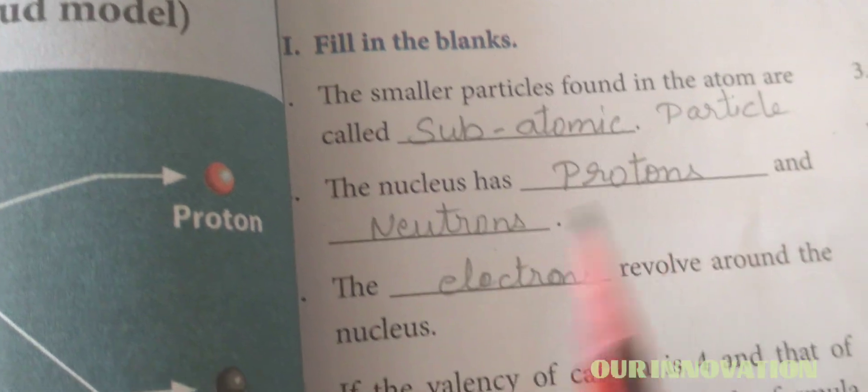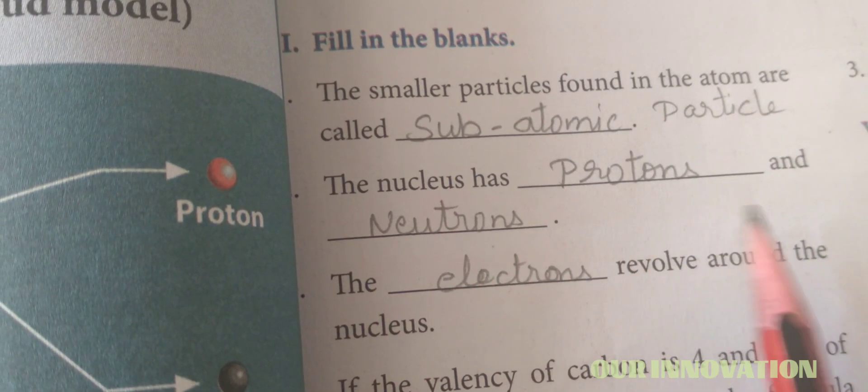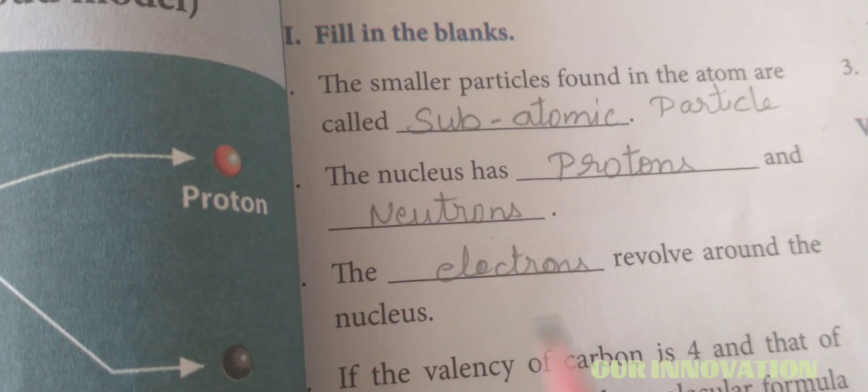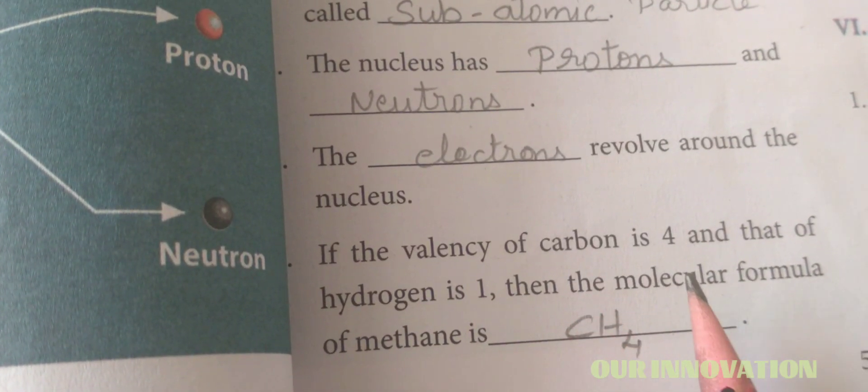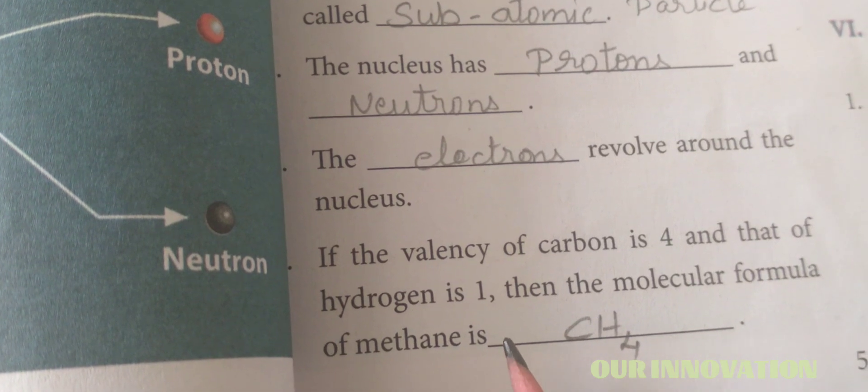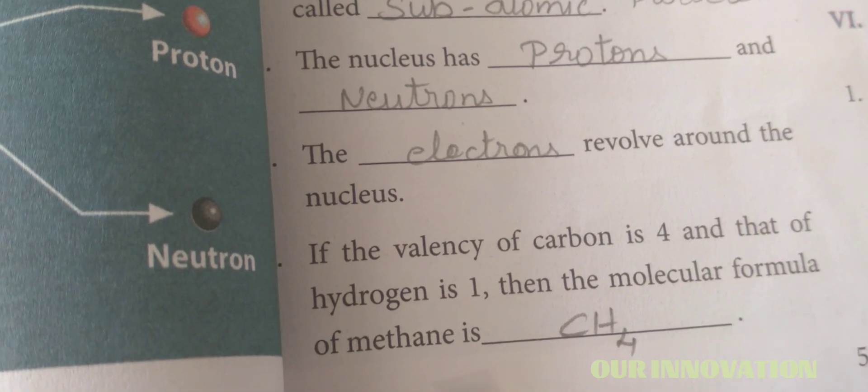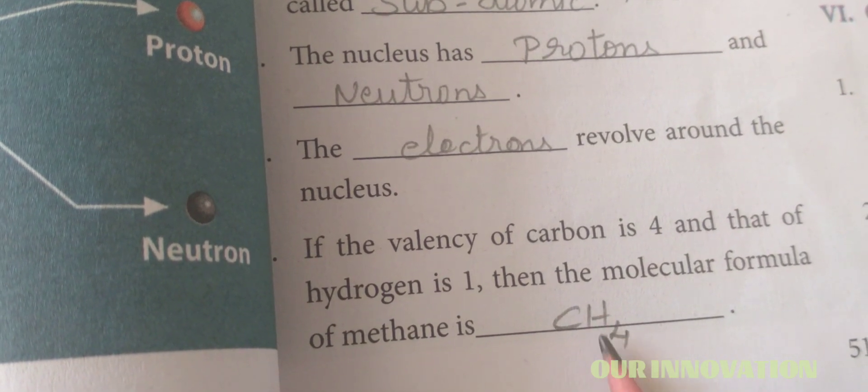Fill in the blanks. The smaller particles found in the atom are called subatomic particles. The nucleus has protons and neutrons. The electrons revolve around the nucleus. If the valency of carbon is 4 and that of hydrogen is 1, then the molecular formula of methane is CH4.